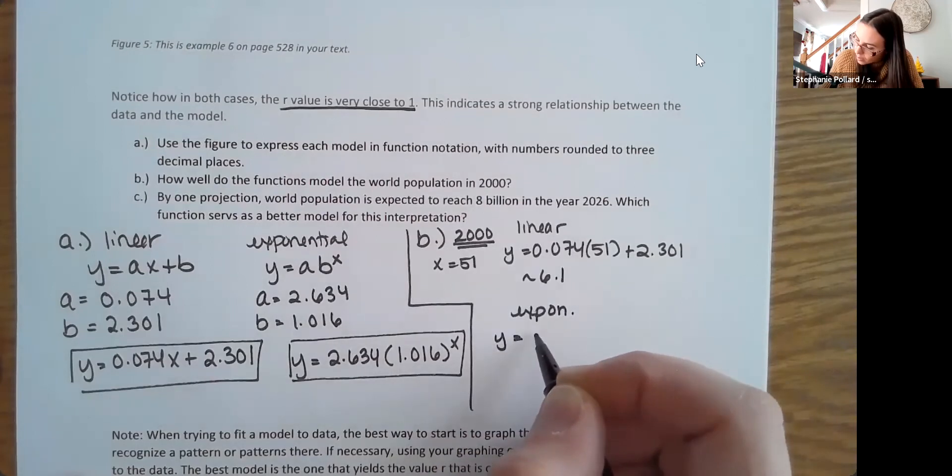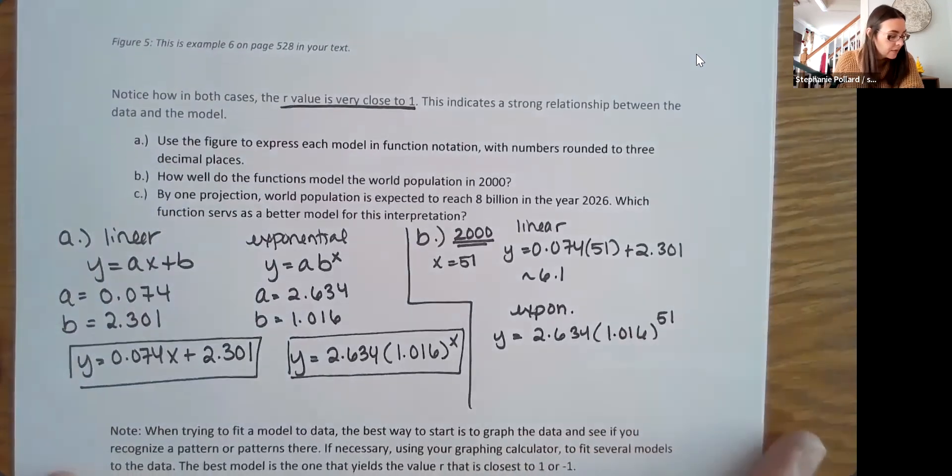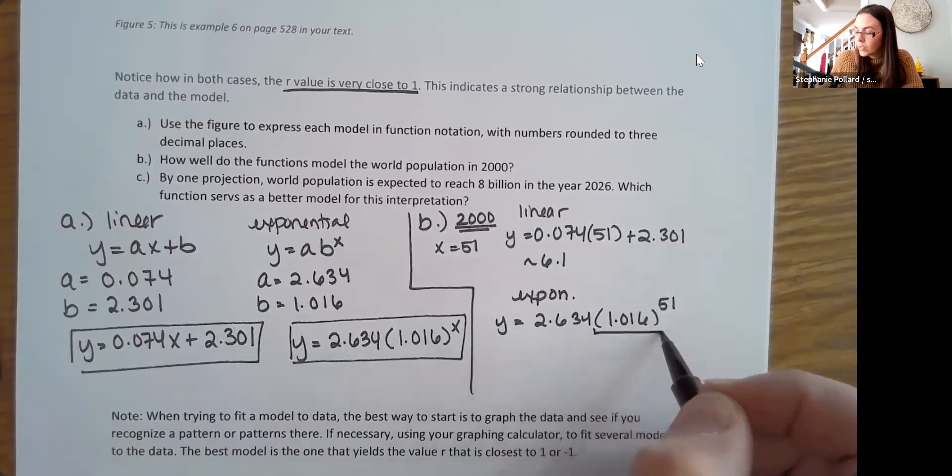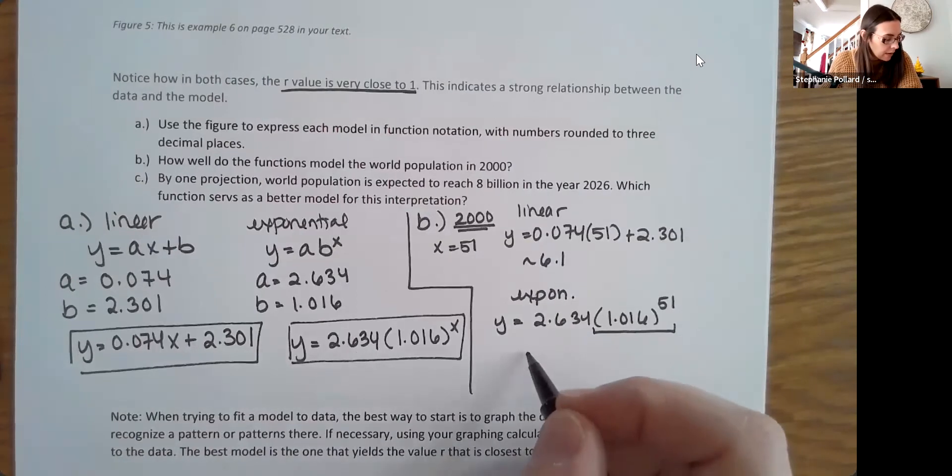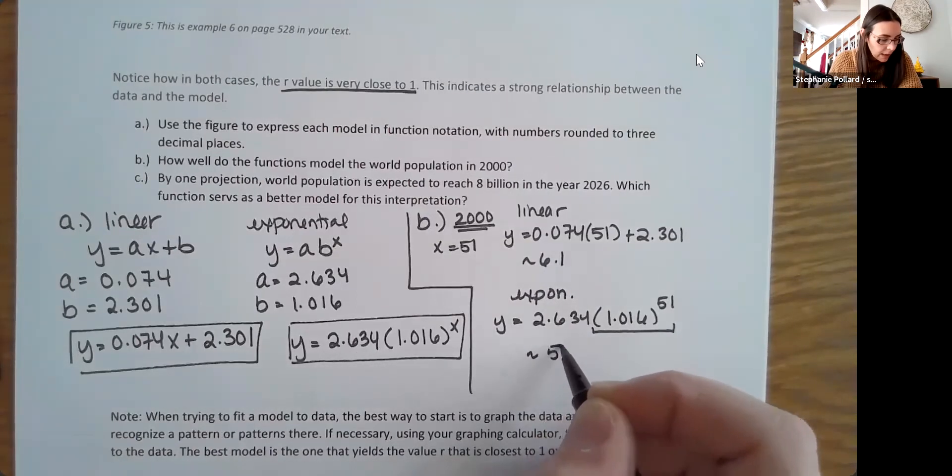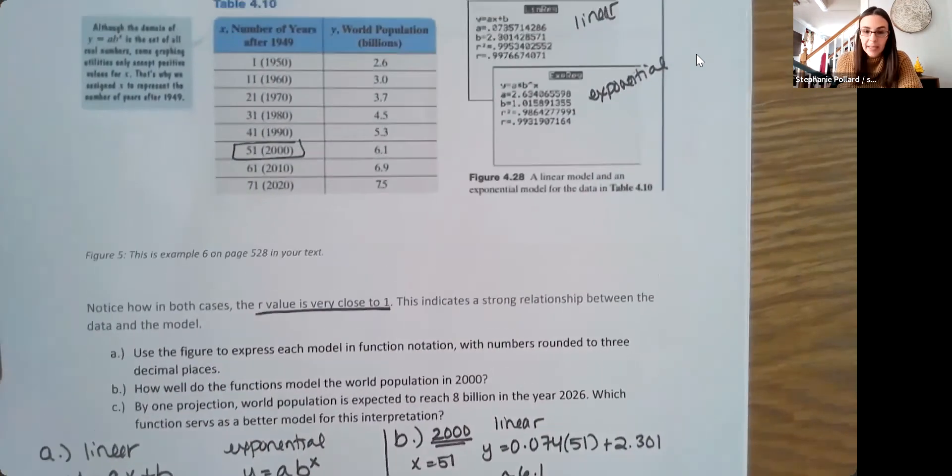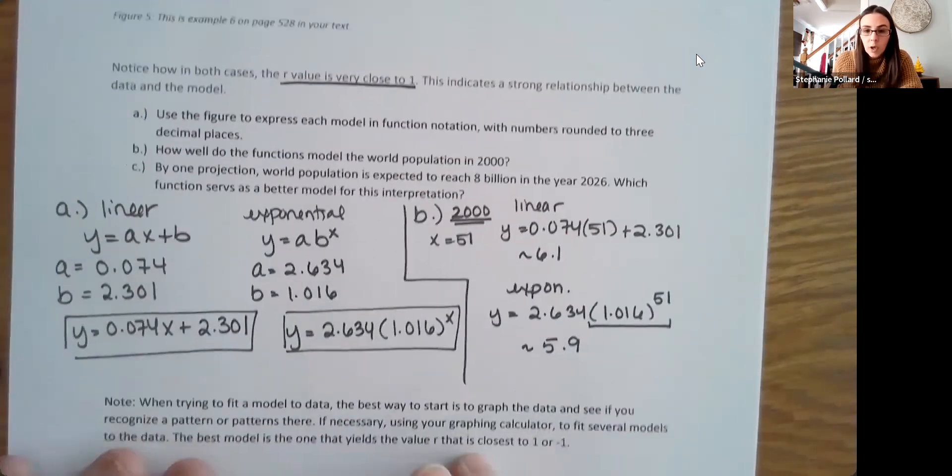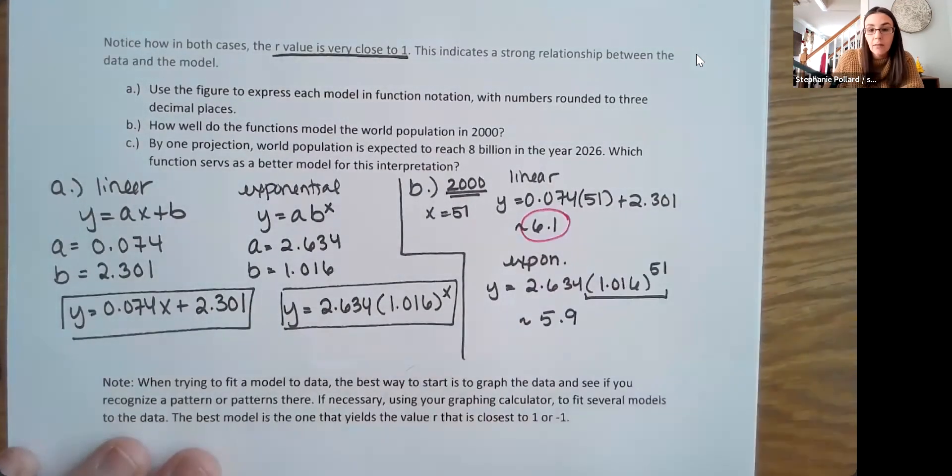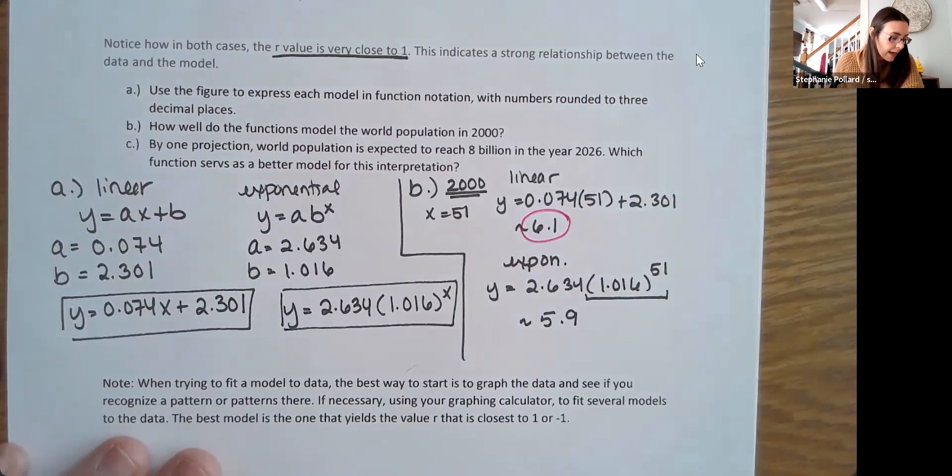And when I use my exponential model, again, my X value there is 51. Just be careful, make sure you do this first on your calculator. You want to do your exponent and then multiply it by that 2.634. And what you get here is about 5.9. So if I go up to my actual data, I can see that the actual data was 6.1 in 2000. So my better model here is right here. 6.1 matches, right? Again, we had to round, but that's a very close match. 5.9 is still close, but this one is better. So our linear model would actually be better.